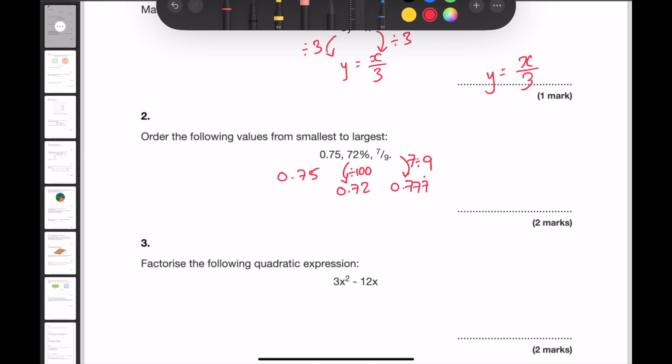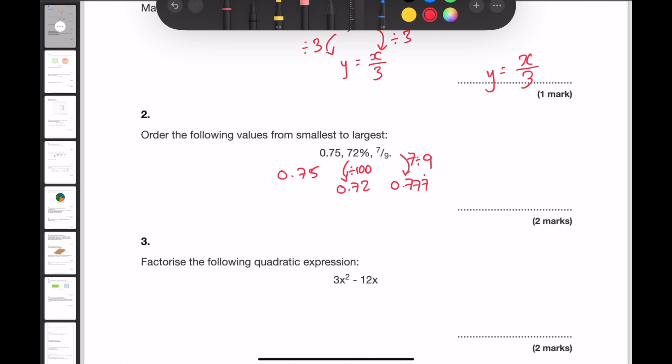Now place each of these decimals in the correct order. So the smallest is 0.72, the next is 0.75, and then it's 0.7 recurring. Remember to go back to the original question, and actually order the original set of numbers. So 0.72 related to 72%, 0.75, and then 7 over 9.